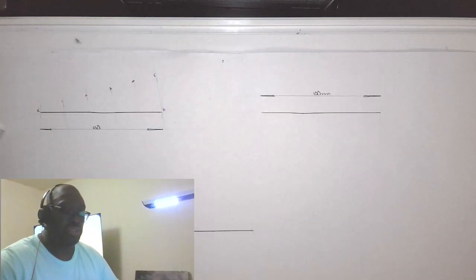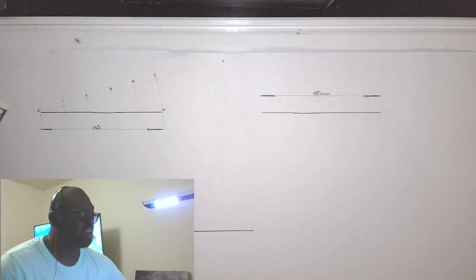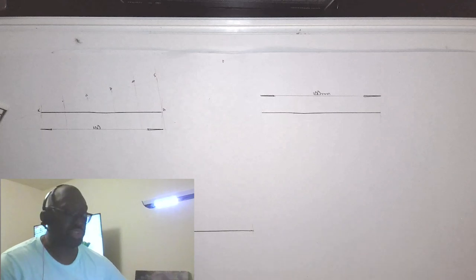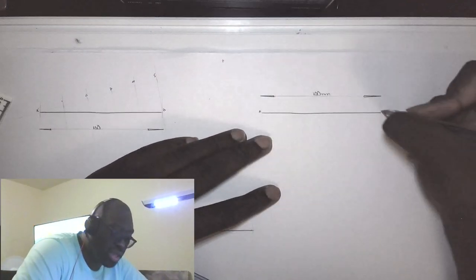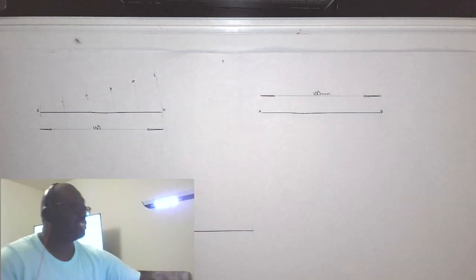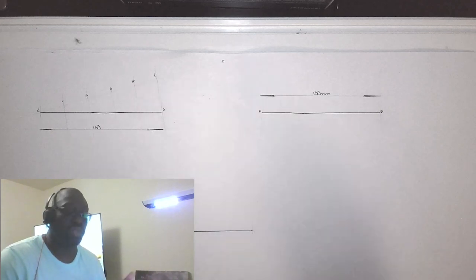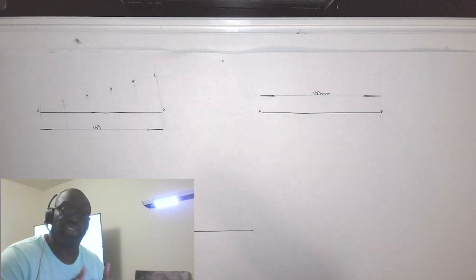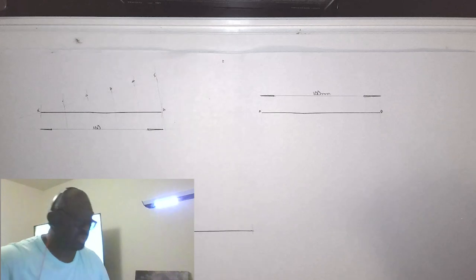We're going to do the same thing for the next line. According to the question, I'm going to call this line AB, which measures 100 millimeters. We're going to use the same technique, but this time we're going to divide the line into seven equal parts. Let's do this.